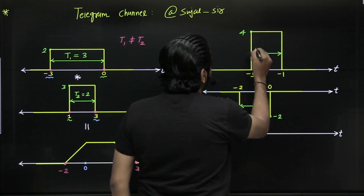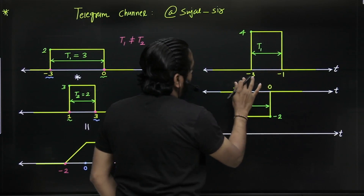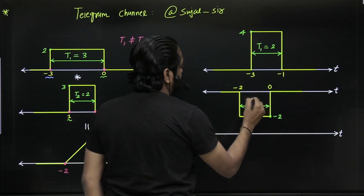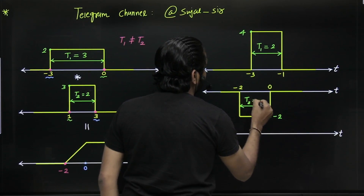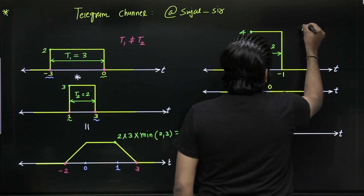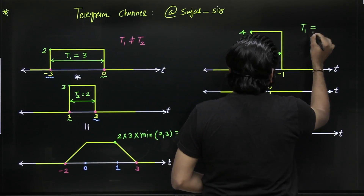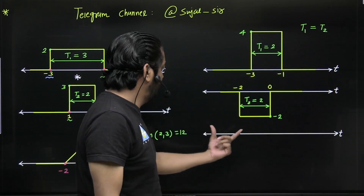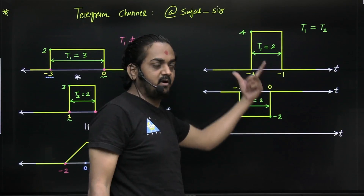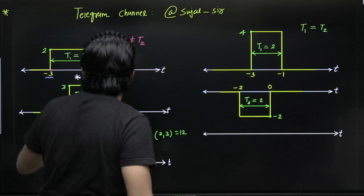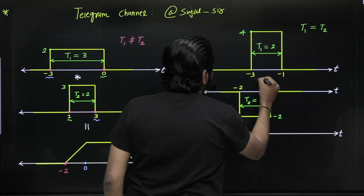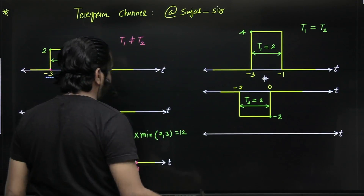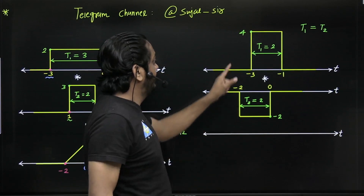Suppose here the length is from minus 3 to minus 1, so length is 2, and here from minus 2 to 0, length is also 2. Both pulses have the same length — t1 equals t2. When you perform convolution of equal length pulses, the resultant signal will be a triangle.